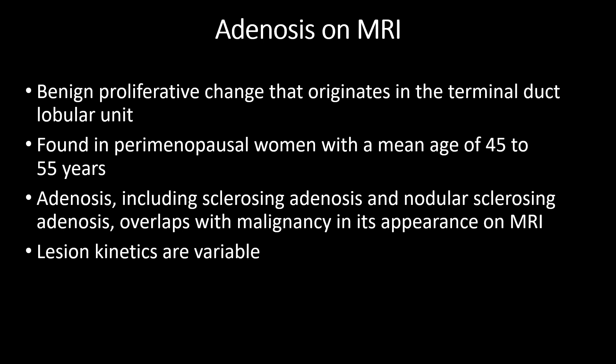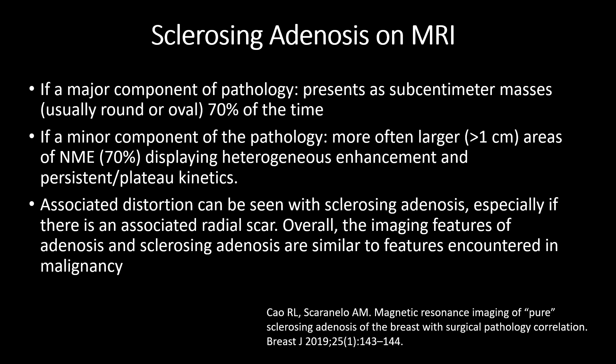Adenosis on MRI is found in perimenopausal women with a mean age of 45 to 55 years. Adenosis, including sclerosing adenosis and nodular sclerosing adenosis, overlaps with malignancy in its appearance on MRI, and lesion kinetics are variable. If sclerosing adenosis is a major component on pathology, these usually present as subcentimeter masses, usually oval or round, 70% of the time. If it is a minor component, more often these are larger, greater than one centimeter areas of non-mass enhancement, with about 70% displaying heterogeneous enhancement and persistent or plateau kinetics. Associated distortion can be seen with sclerosing adenosis, especially if there is an associated radial scar. Overall, the imaging features of adenosis and sclerosing adenosis are similar to features encountered in malignancy.